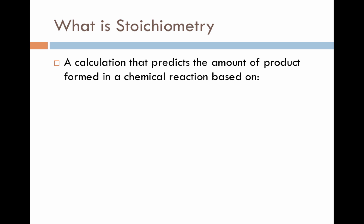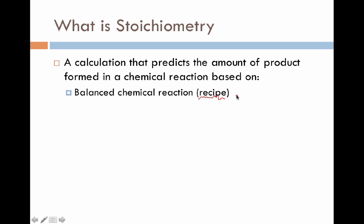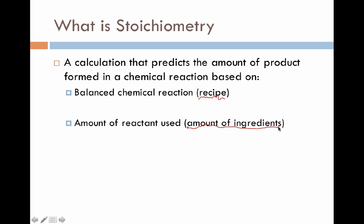So what is stoichiometry? It is a calculation that predicts the amount of product formed in a chemical reaction, based on two main factors. The first is the balanced chemical reaction itself, which acts like a recipe telling us how many of each chemical is necessary. The second is the amount of actual reactant used — akin to the amount of ingredients in a recipe. If you double or triple the ingredients, you double or triple the outcome, getting twice as many cookies. The recipe tells us the rate chemicals are used, and the amount of ingredients tells us how many times we can perform the reaction.